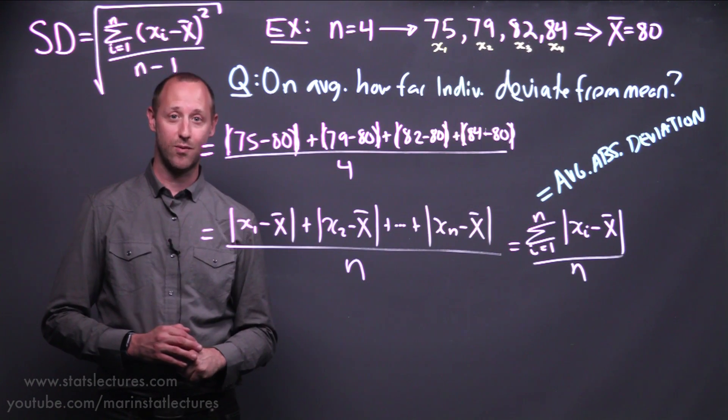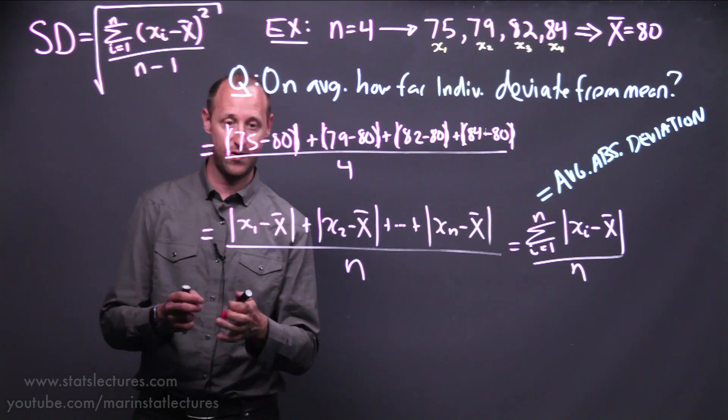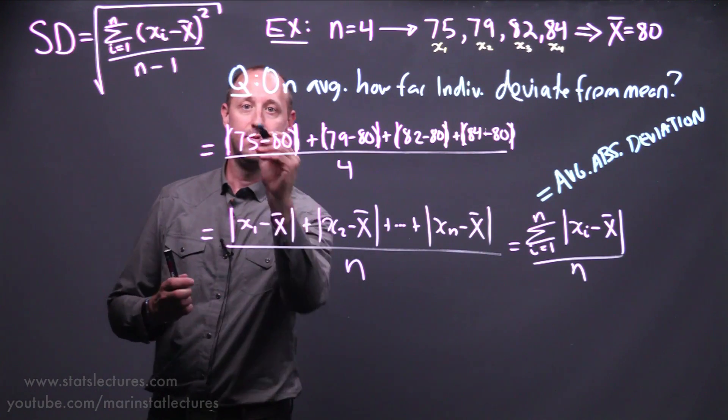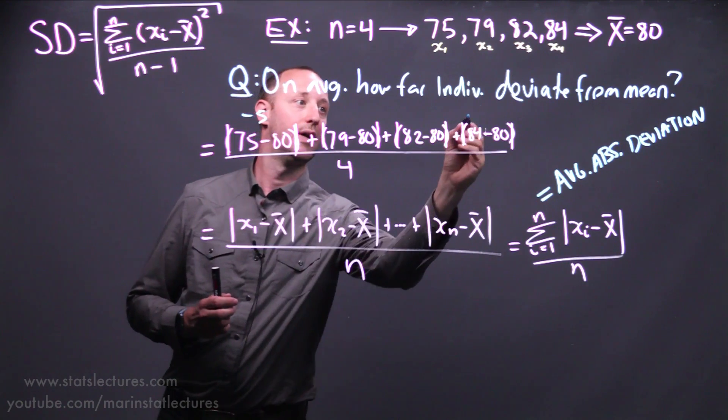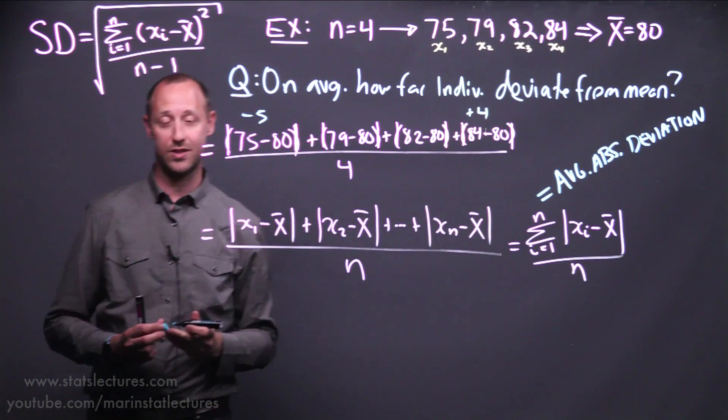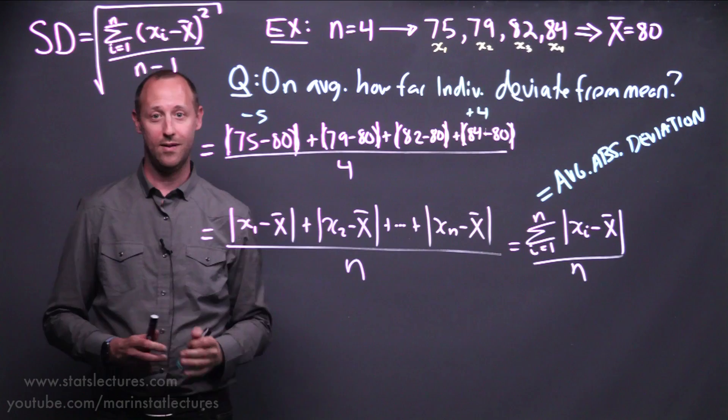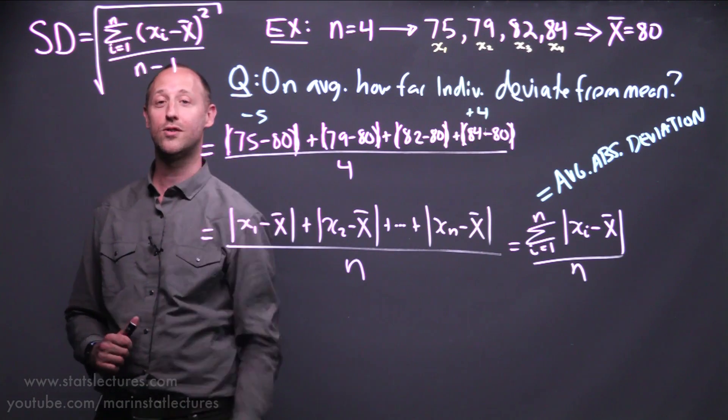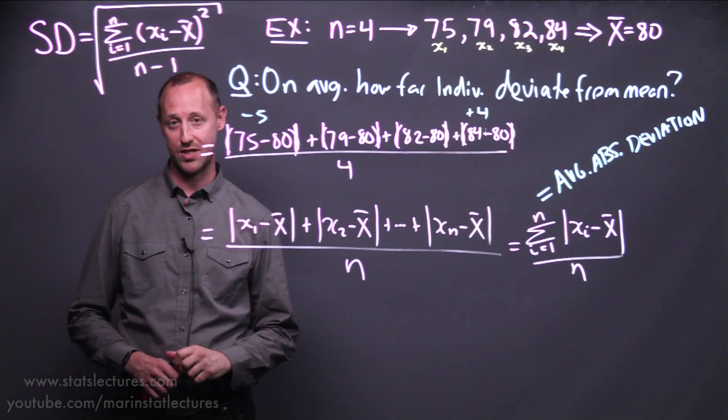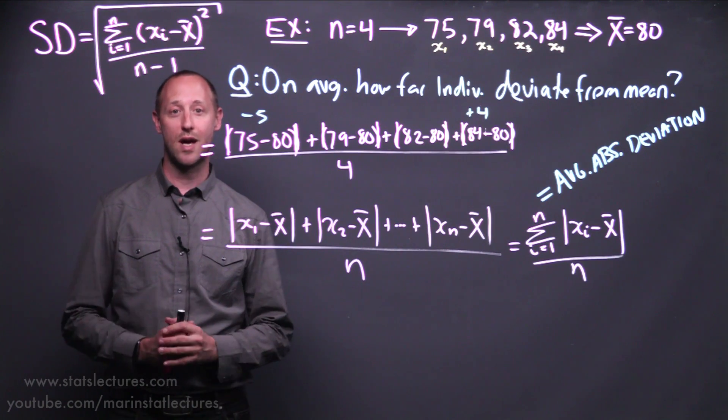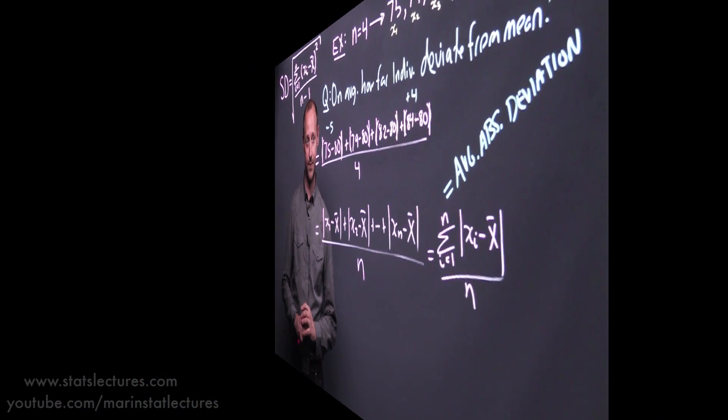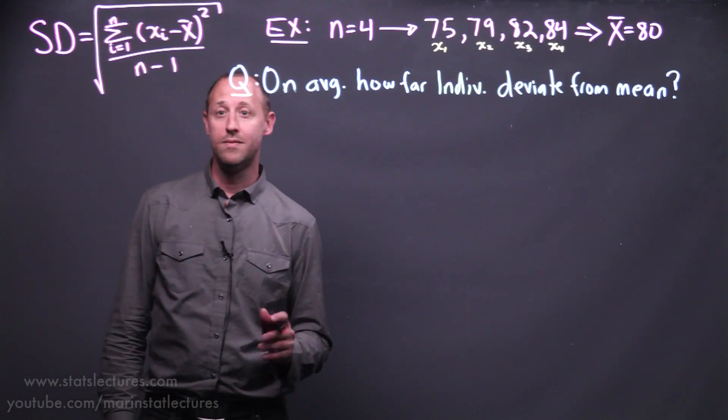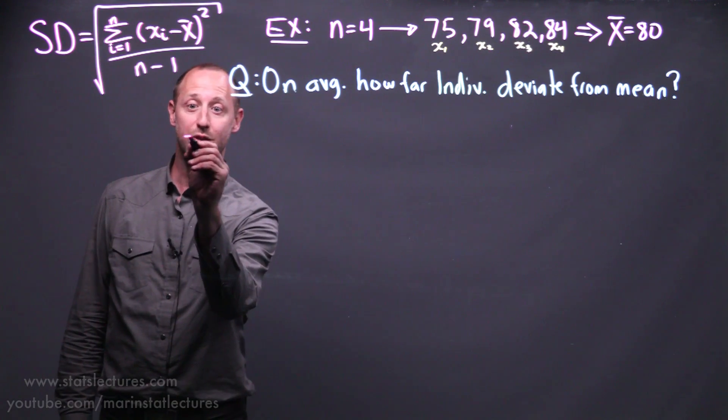So we need to think of another way to get rid of the effect of having these negative values and positive values canceling each other out. We can see the answer right here. We can also think about squaring these deviations. So let's take a look at building up that formula now. As noted, we can think about using squared deviations.